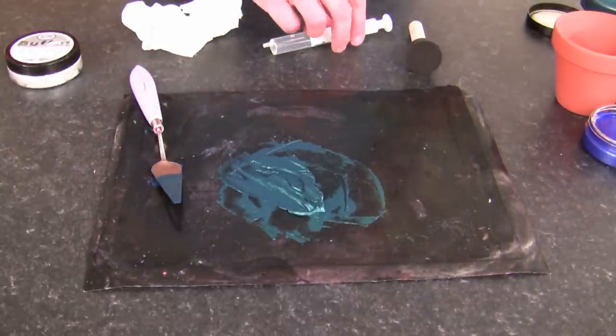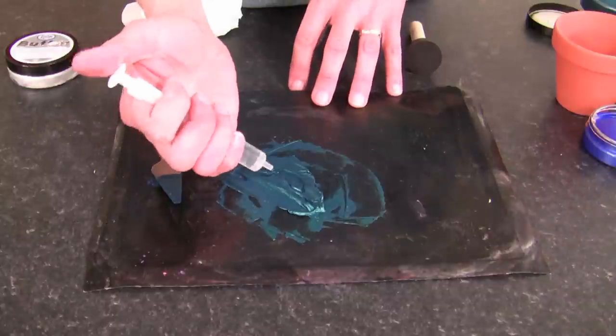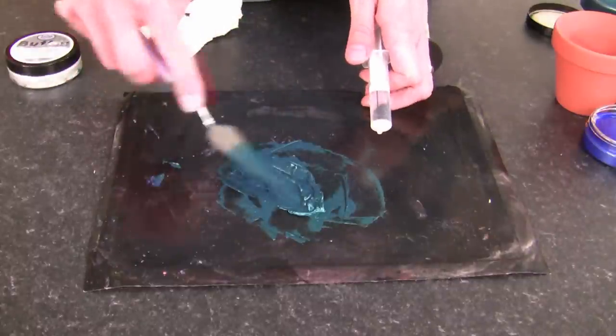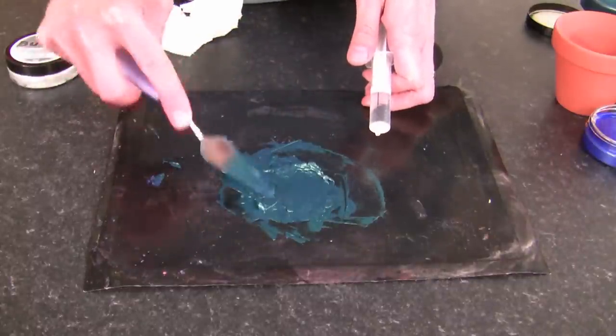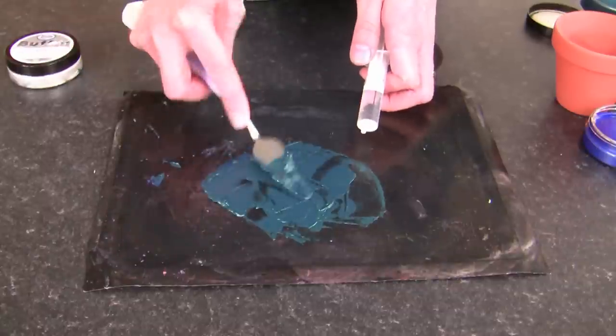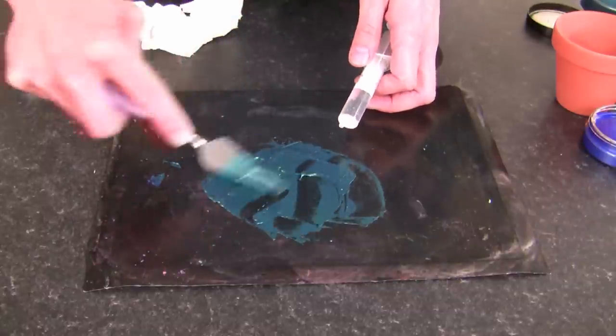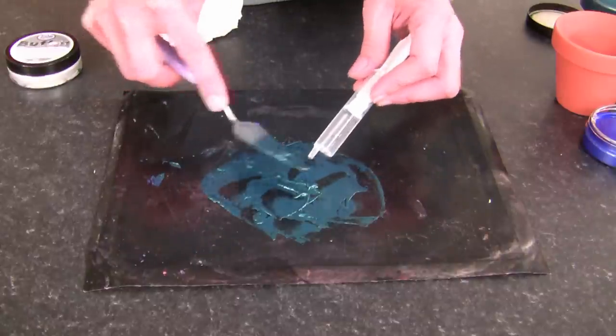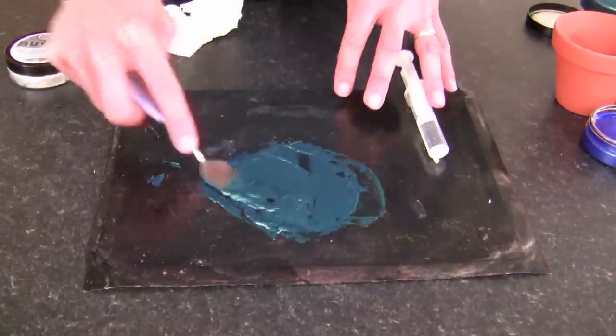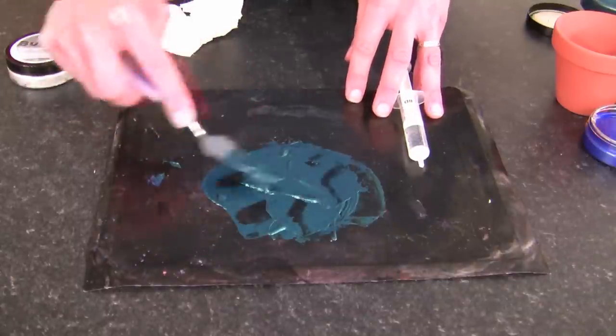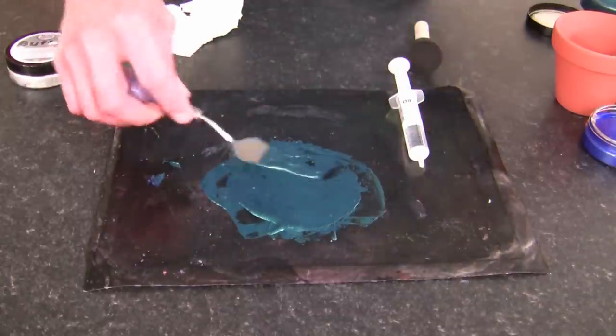So now what we need to do is add a little bit of water. Let's bring our syringe in and start mixing that in. The sort of mixture you're trying to achieve is not a paste, not really liquidy, just somewhere in between, almost like a creamy type finish. There we go, you can see it glistening away.